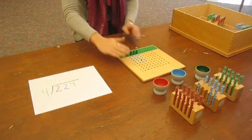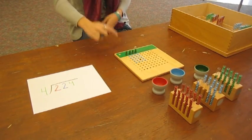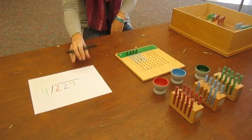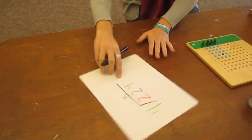We have two left so we cannot finish distributing them to our four. Once we are finished we count up our tens and we have five. So our five goes above our two.